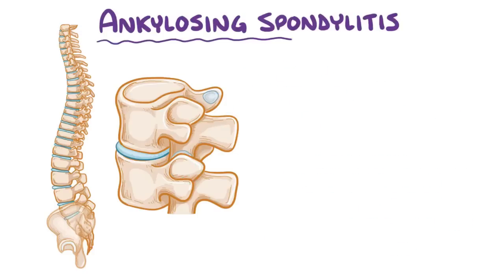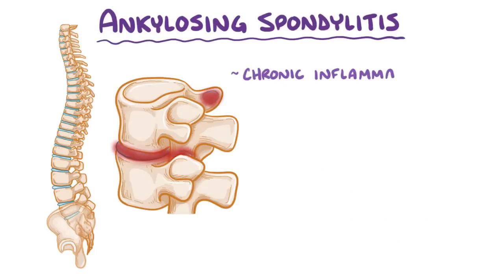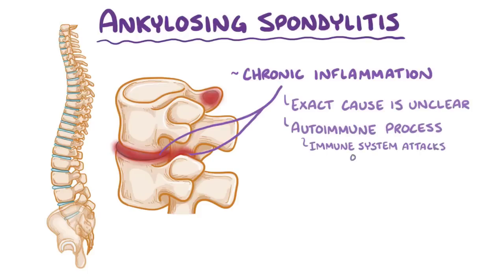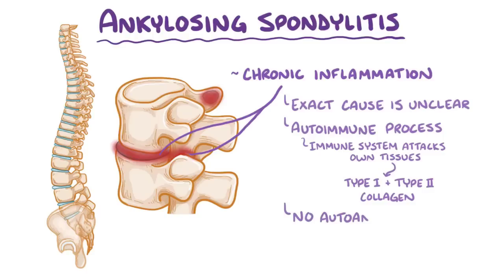In ankylosing spondylitis, there is chronic inflammation of the intervertebral joints and the facet joints of the spine. The exact cause of inflammation is unclear, but it's thought to be due to an autoimmune process, which is when the immune system attacks its own tissue, in this case the type 1 and type 2 collagen in the joints. But unlike many other autoimmune conditions, no autoantibody has been specifically linked to the disease.